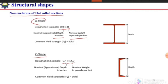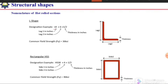For the angle section, we use the letter L followed by three numbers. The first number shows the length of the longer leg, the second number shows the length of the shorter leg, and the third number indicates the thickness of the two legs.